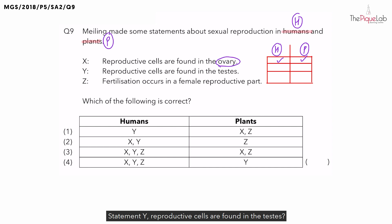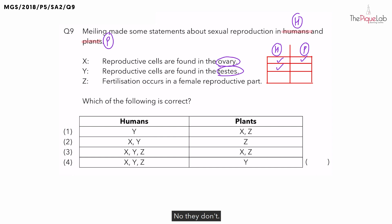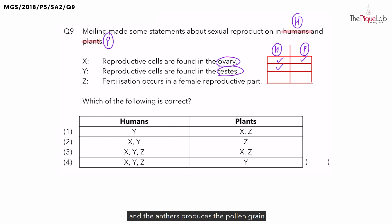Statement Y: reproductive cells are found in the testis. What is the function of the testis? The testis produces the sperms, which are the male reproductive cells for humans. So this statement is true for humans. But do plants contain a testis? No, they don't. In fact, plants contain the structure called the anther, and the anther produces the pollen grain, which contains the male reproductive cells in plants. So this statement is not true for plants.